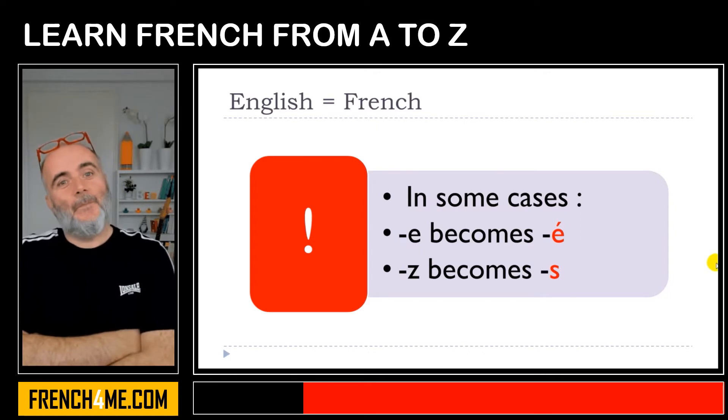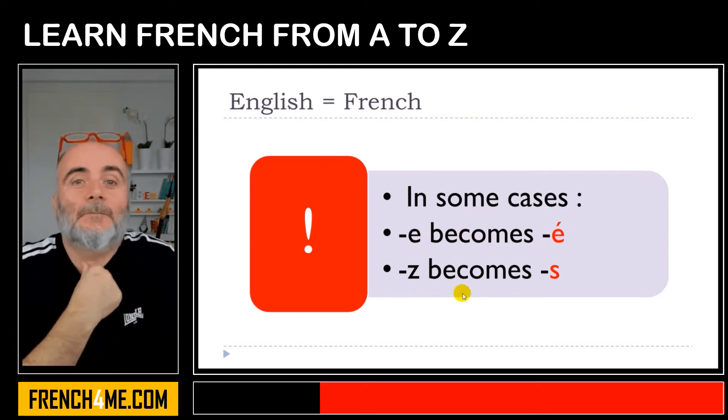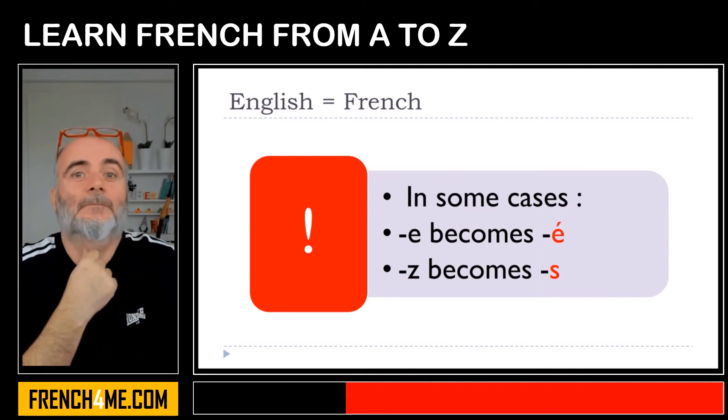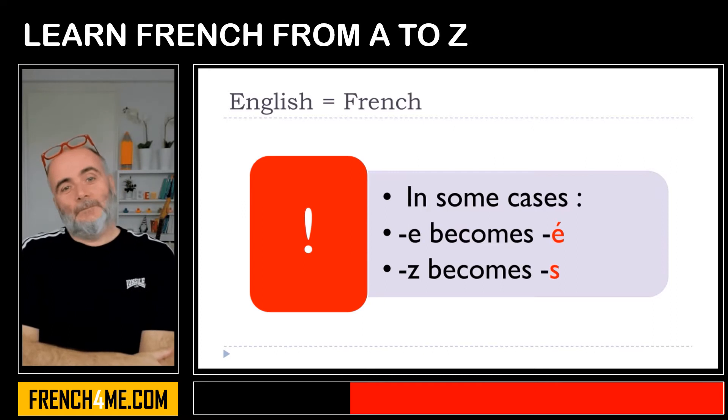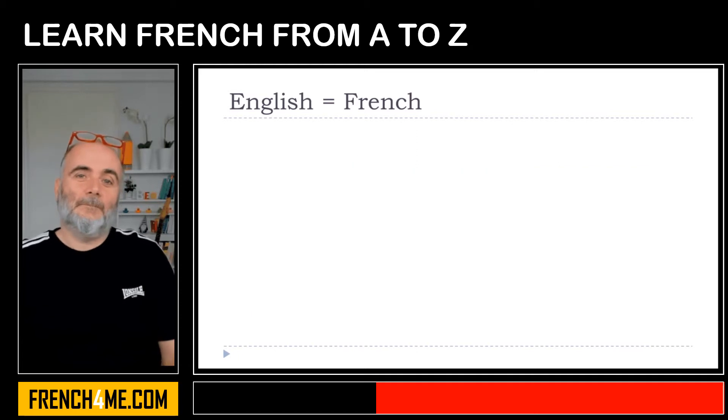Keep in mind as well that in some cases we'll have some differences in the writing. E could become é and then Z could become S. Let's see now, it's the second part of the list. If you're interested in this, remember that there was a previous video that covered 50 words. In that video we'll cover still 50 words, and the total amount is 500.